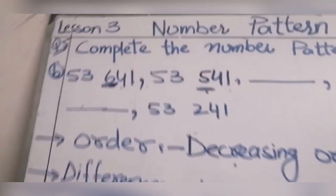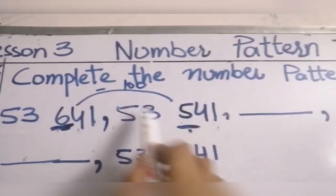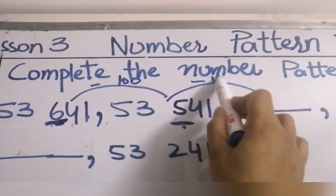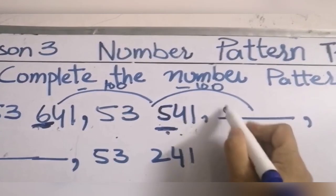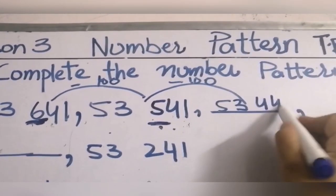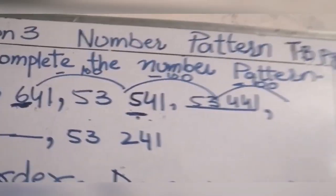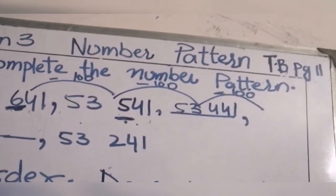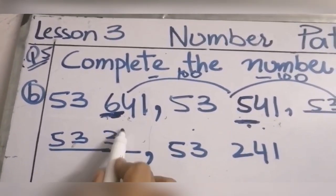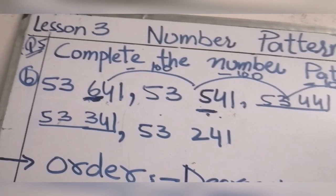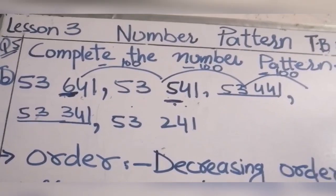We subtract 100 from each number. From 53,541 it becomes 53,441; when we subtract another 100 from 53,441 it becomes 53,341. The last number in the sequence is 53,241.